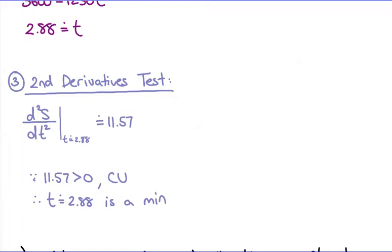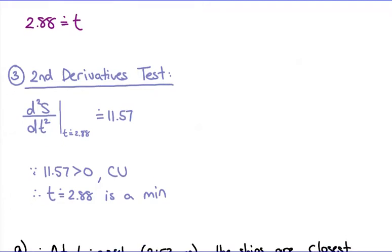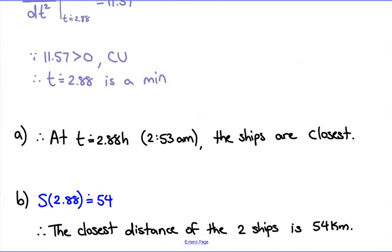The result should match whatever the question is asking for. In this case we were minimizing distance, so it does match. If it doesn't, that's a check telling you that you might have done something wrong. At the very end it will look slightly different from question to question, because you're just answering what the question is asking — finding your conclusions.